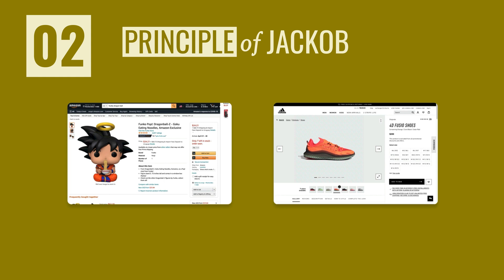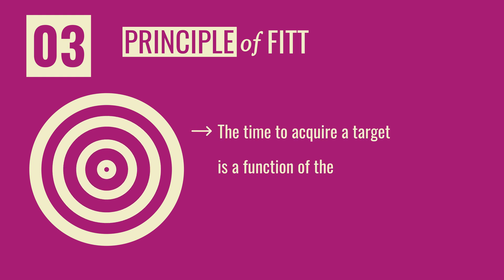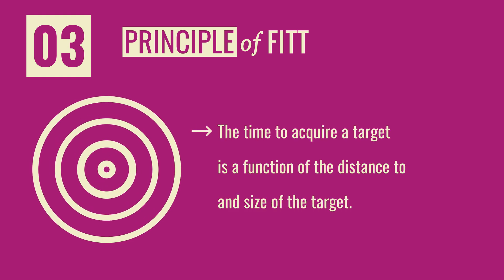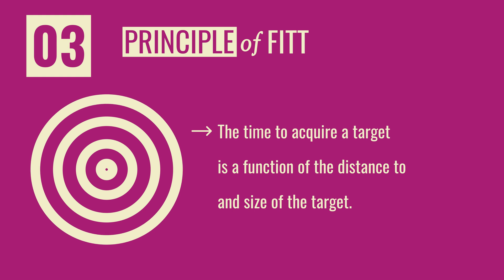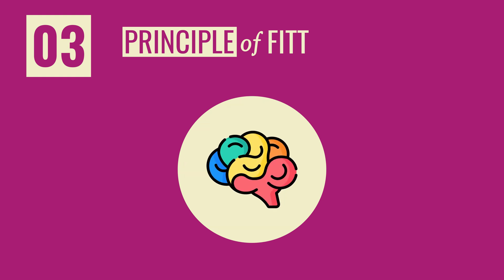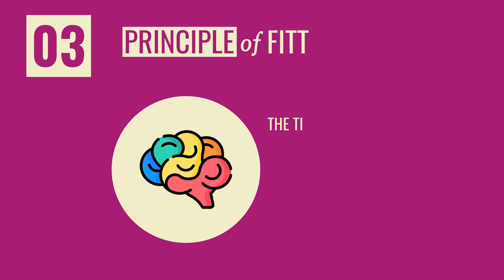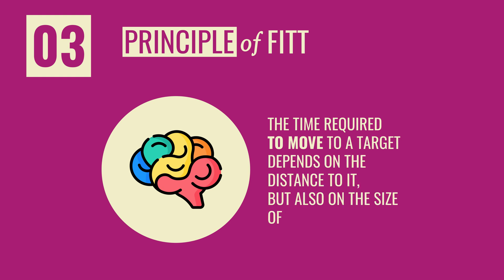Let's look at principle number three: the principle of Fitts' Law. This states that the time it takes someone to select an object on screen depends on how far the cursor is from that object and the size of that object. This principle was discovered by psychologist Paul Fitts. After examining the human motor system, it showed that the time required to move to a target depends not only on the distance to it but also on the size of the target.